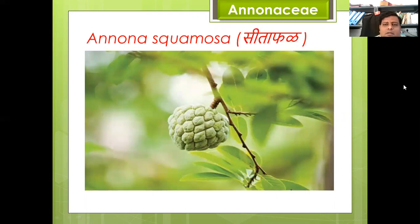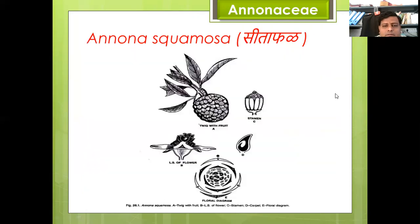Here is a member of family Annonaceae: Annona squamosa, commonly known as sitaphal or custard apple. Here is the diagram of Annona squamosa showing the fruit with a twig and a single stamen. You can see the longitudinal section of the flower, the carpel, and here is the floral diagram of family Annonaceae showing the arrangement of sepals, petals, stamens, and carpels.